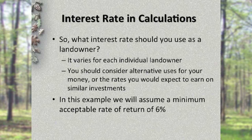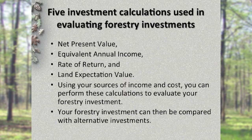What interest rate should you use? It varies for each landowner. You should consider alternative uses for your money or the rates you would expect to earn on similar investments. In this example, we will assume a minimum acceptable rate of return of 6% for this investor. Here are four of the primary financial formulas that professional foresters use to advise landowners: Net Present Value, Land Expectation Value, Equivalent Annual Income, and Rate of Return. Using your sources of income and cost, you can perform these calculations to evaluate your forestry investment, and your investment can then be compared with alternative investments.